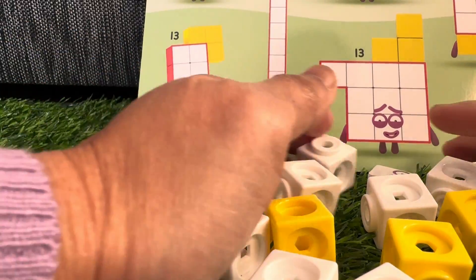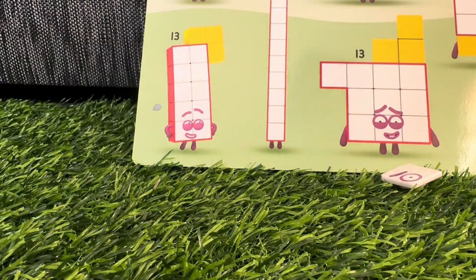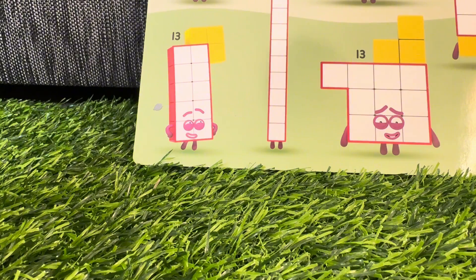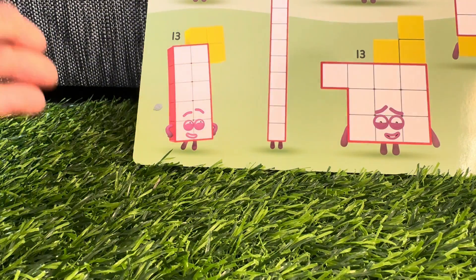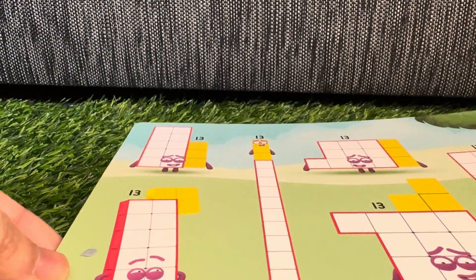Come on, let's build Number Blocks 13! Yes! He has 10 white blocks with red borders and also 3 yellow blocks.